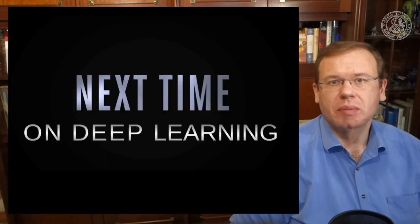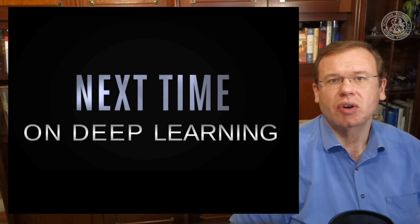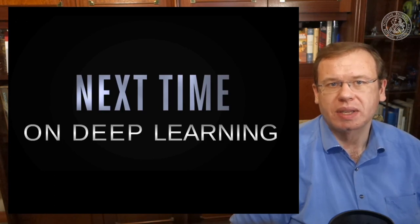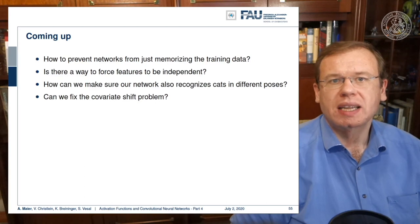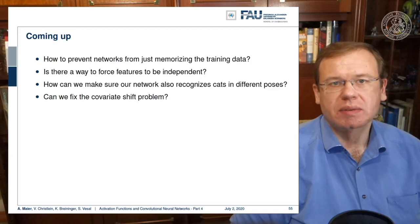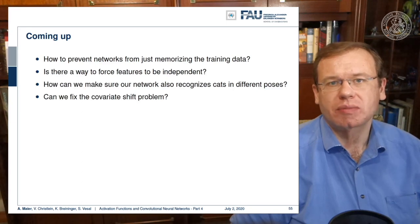So next time in deep learning we want to talk about how we can prevent networks just from memorizing the training data. Is there a way to force features to become independent? How can we make sure that our network also recognizes cats in different poses? Also a very nice recipe that can help you with that and how we can fix the internal covariate shift problem. I think these are all important points and I think these questions really deserve to be answered.